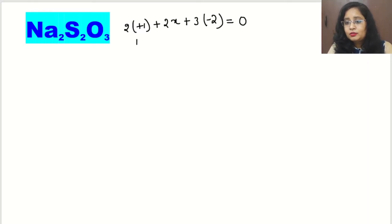Now calculate it: +2 + 2x - 6 = 0. So 2x = 6 - 2, therefore x = 4/2 = +2. This +2 will be the average oxidation state of sulfur.